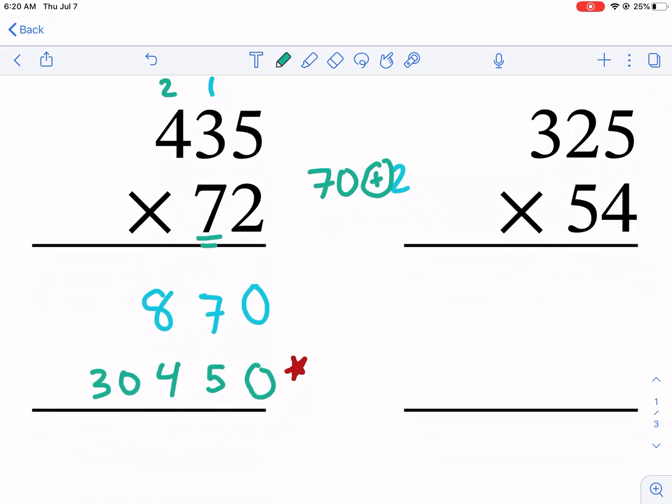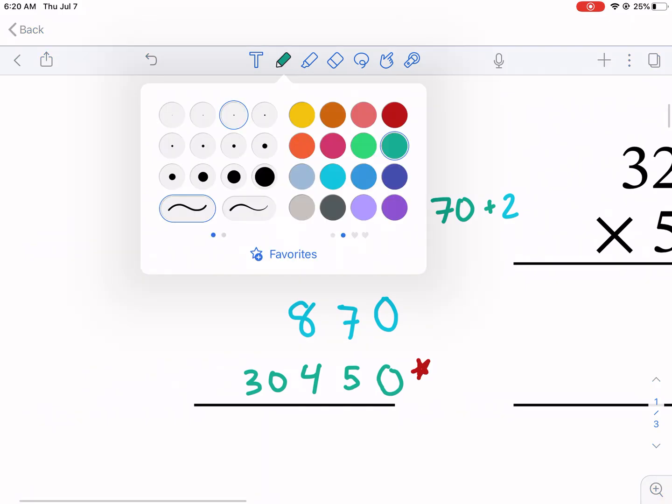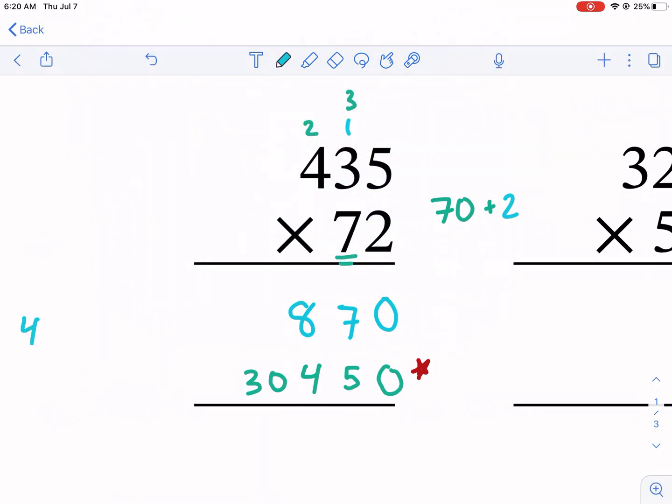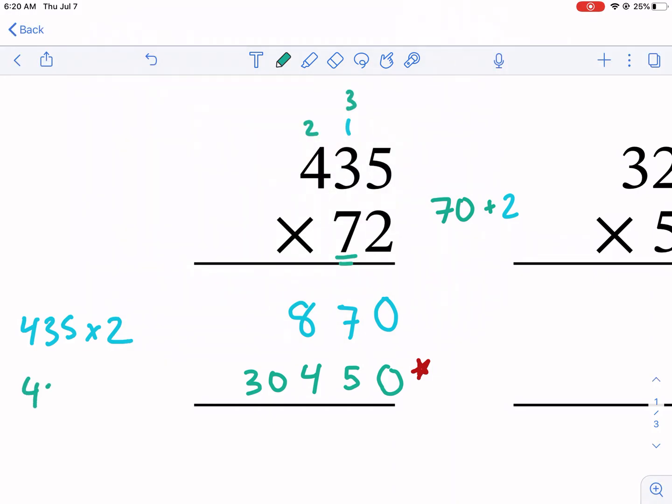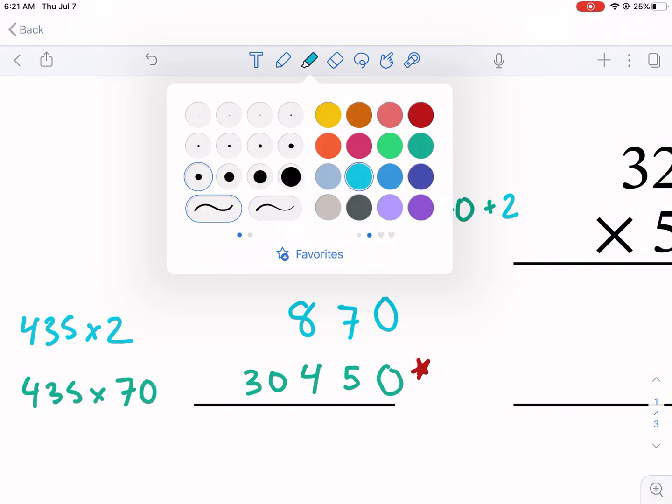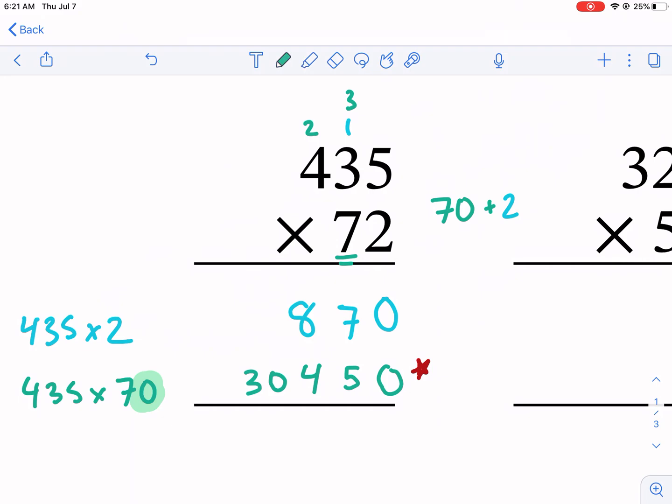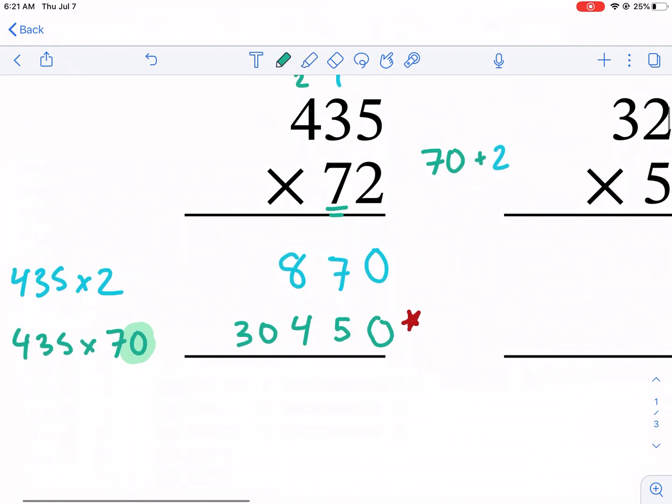Now we're just going to add those two results. We have this as 435 times 2 - that's what we just showed you the first time. I erased the 7. And then we have 435, and this is really times 70, and we made sure that we didn't forget this guy.